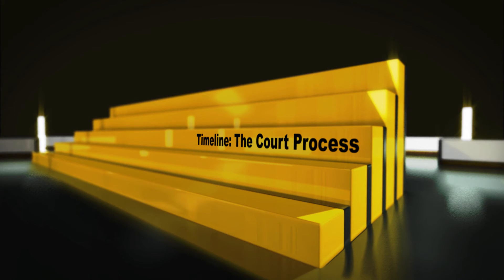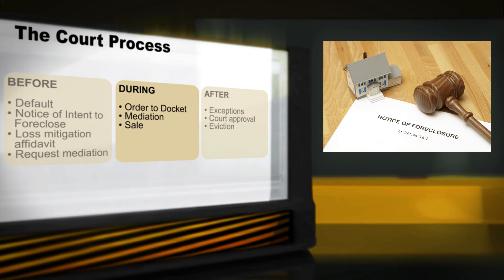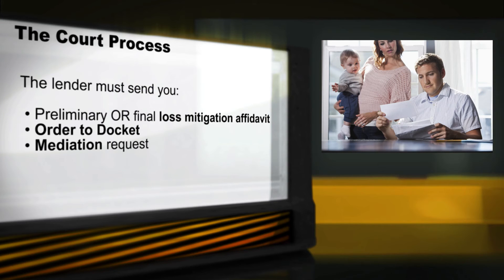The lender begins the formal court process by filing an order to docket with the court. The lender must send you a copy of the order to docket, and must also include either a preliminary or a final loss mitigation affidavit. If the lender sends a preliminary loss mitigation affidavit, it means the lender did not do a loss mitigation analysis before filing documents in court. If the lender sends a final loss mitigation affidavit, it means that the lender has completed the analysis. The final loss mitigation affidavit must tell you why you aren't eligible for loss mitigation.